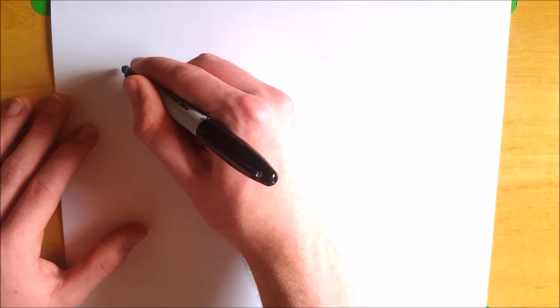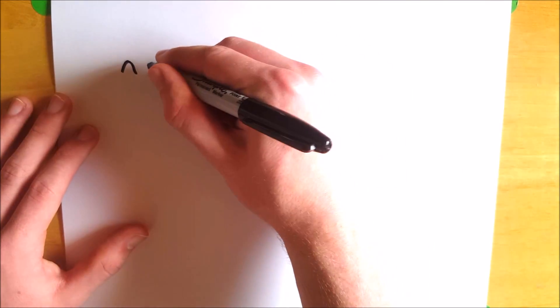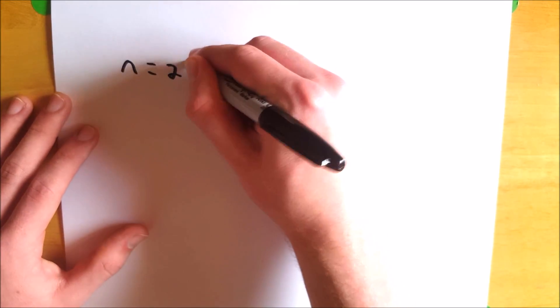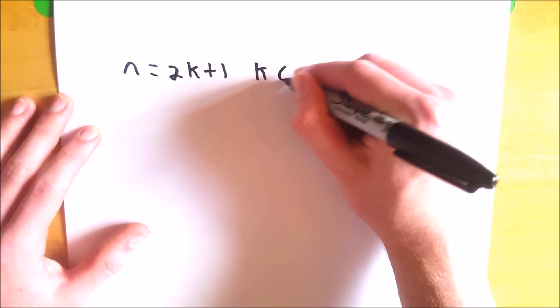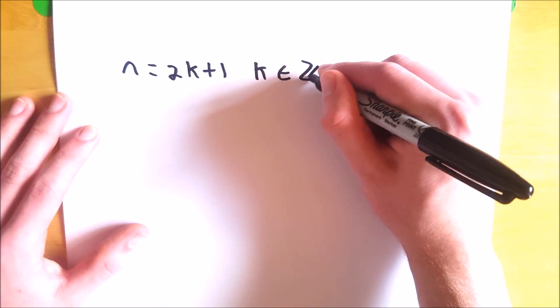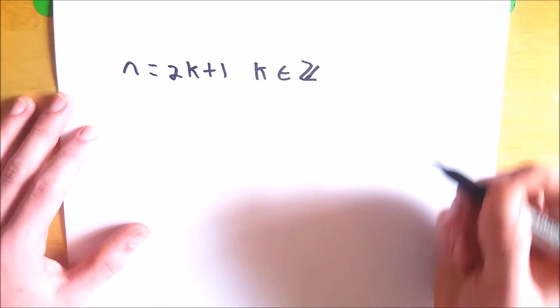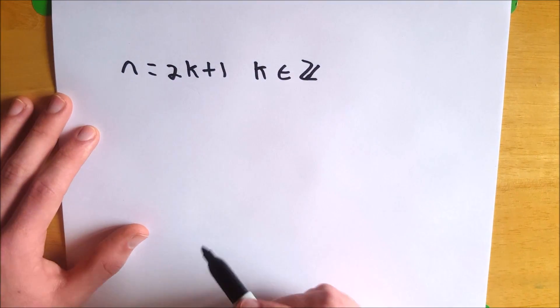So a number n is odd if and only if it equals 2k plus 1 for some k that's an element of Z. So this is very similar to the definition of an even number. If you haven't seen that, I'll put a link in the description.